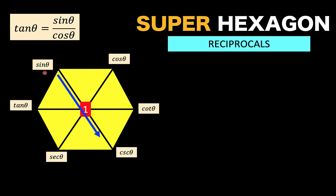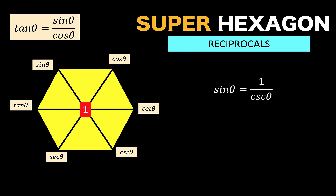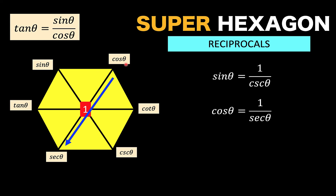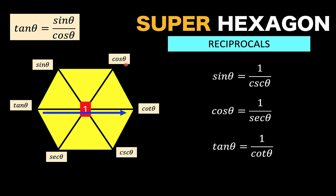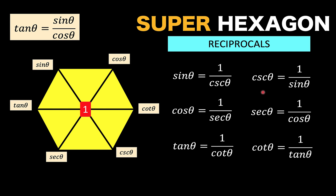If you draw a line across the hexagon, you can read sine theta equals one over cosecant theta. Similarly, cosine theta equals one over secant theta. We can generate all six reciprocal identities using these line arrows, adding another six identities to our previous 18.